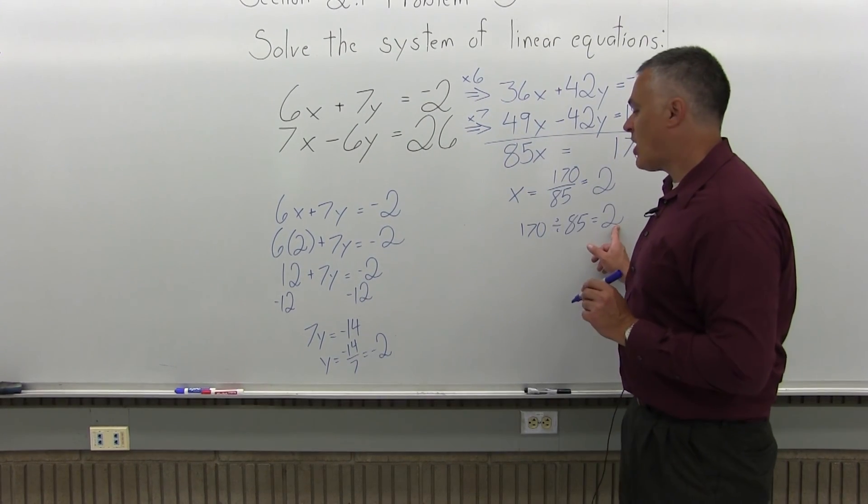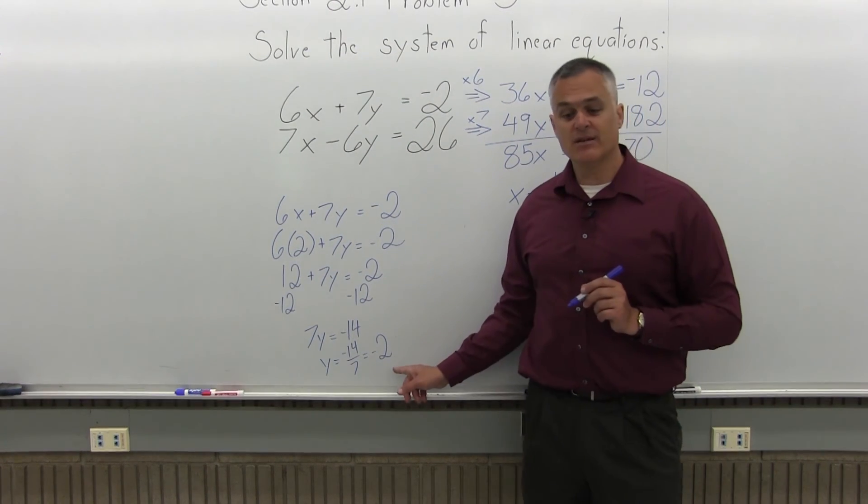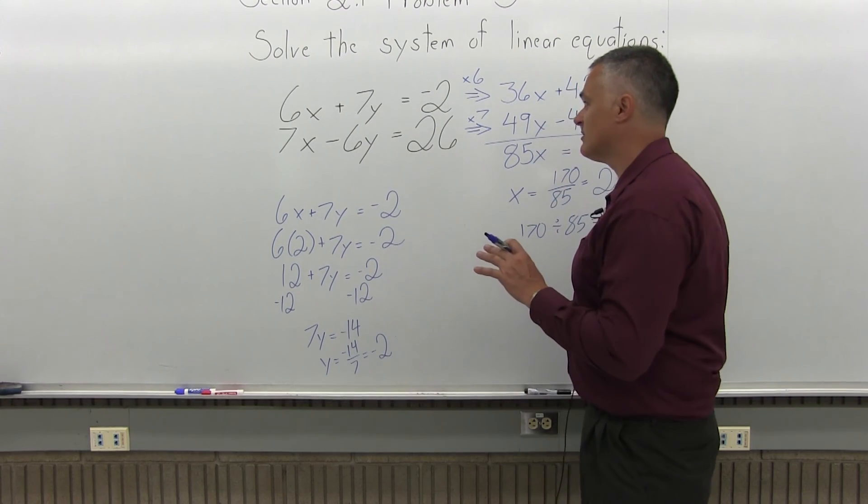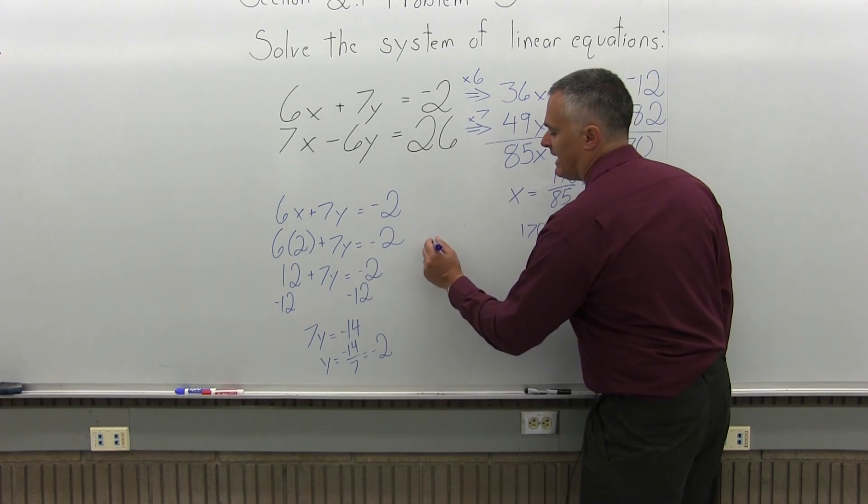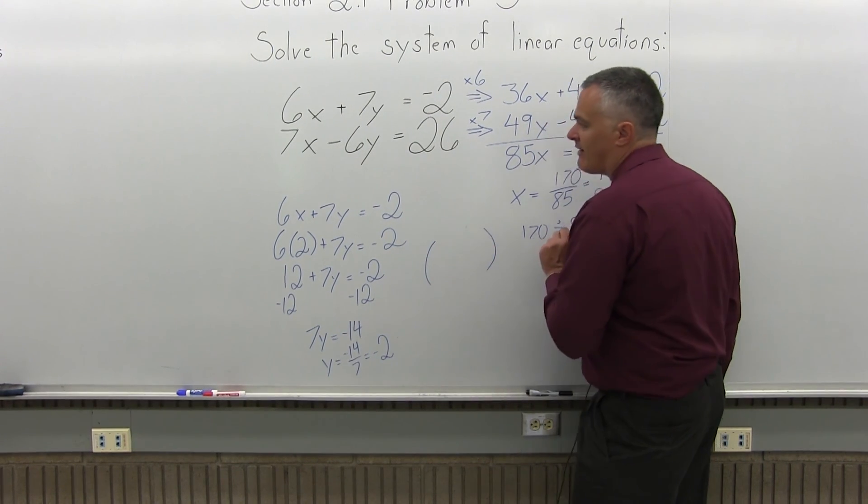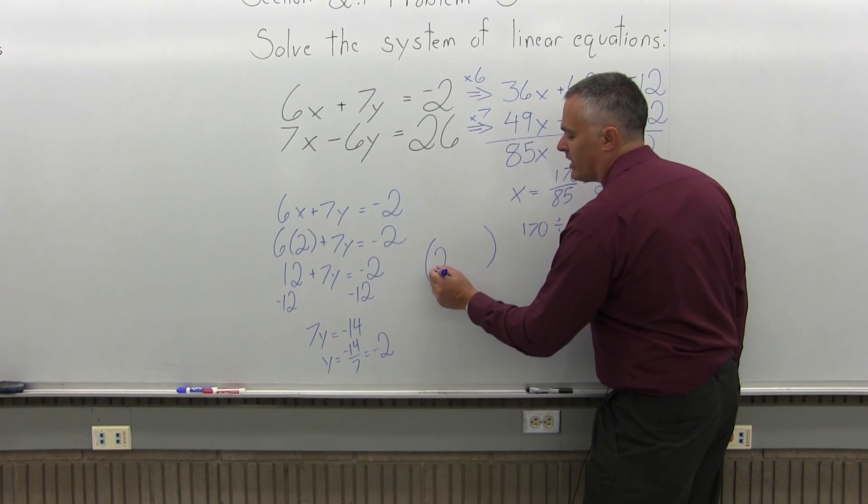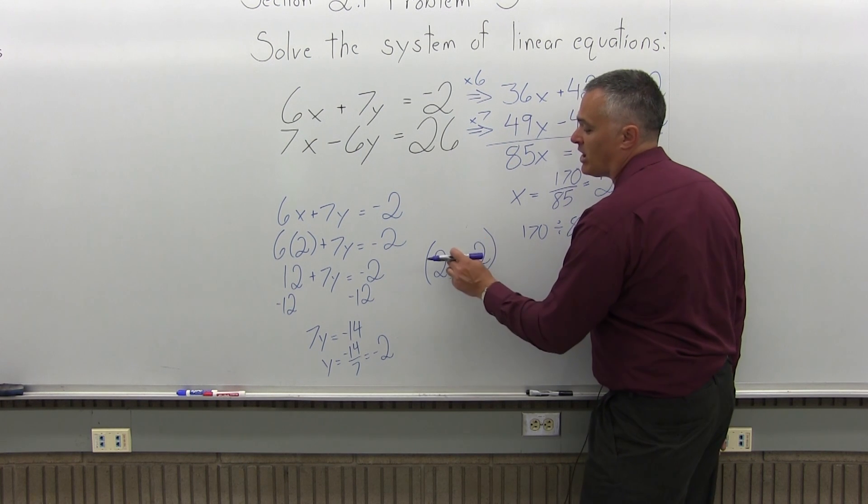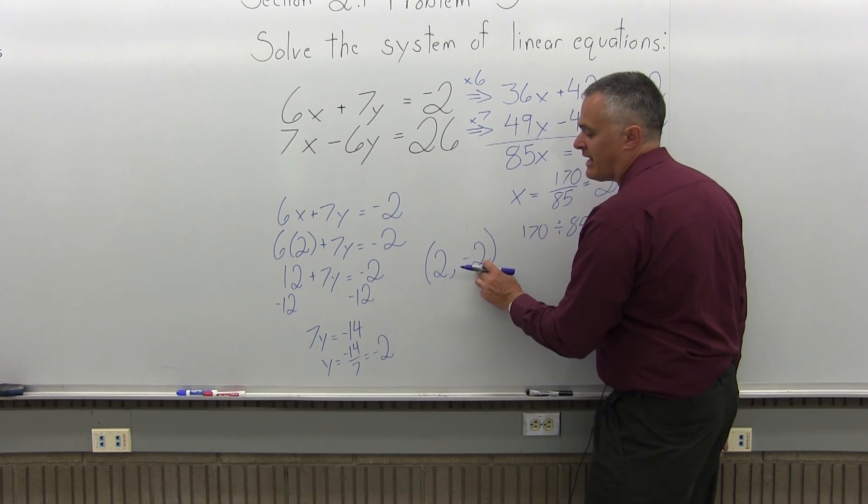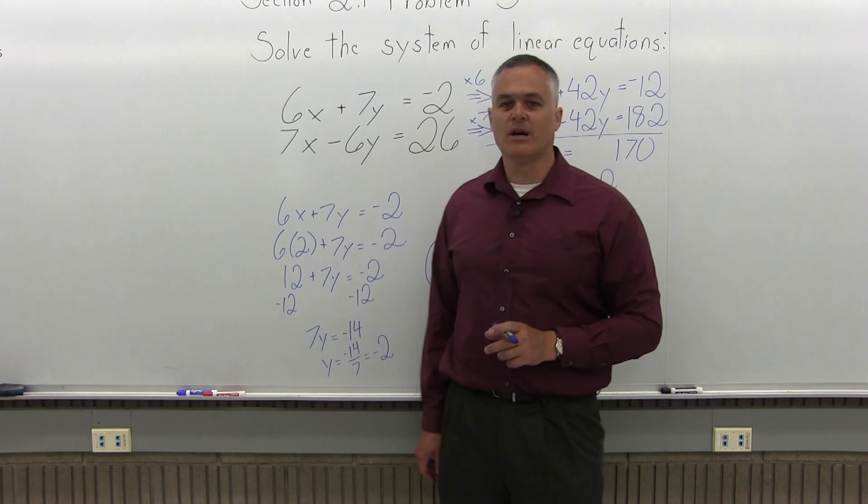So, x is positive 2, y is negative 2. That's the solution to this system of linear equations. And, if you did draw the graph, these two linear equations would intersect at the point (2, negative 2). Positive 2 for the x value and negative 2 for the y value.